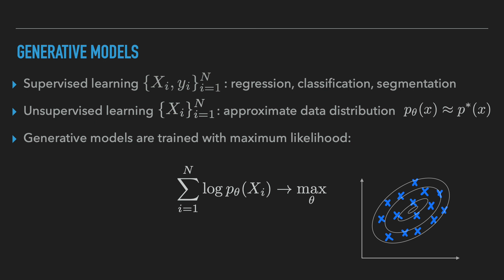Most machine learning problems are supervised — we want to predict the target values y given features x. Classification, regression, segmentation, and object detection are all examples of supervised learning. In unsupervised learning, the goal is instead to learn the distribution of data, which we define by p* of x. The most standard approach in unsupervised learning is to define a parametric model p_theta that defines a likelihood in the data space.